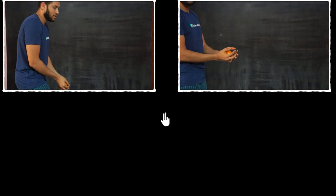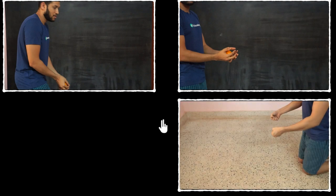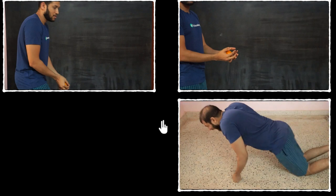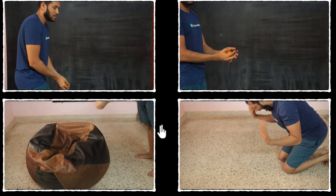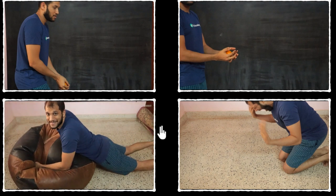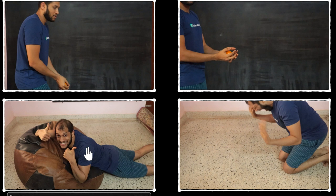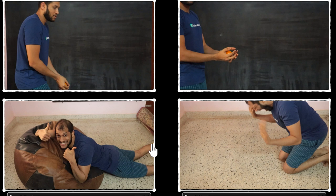A similar question: when you fall on a hard surface, it hurts — that hurts a lot. Please don't try this at home, it seriously hurts. On the other hand, we know that if you're falling on something soft like a cushion, or maybe in my case a bean bag, it doesn't hurt much. But why? Why does falling on soft surfaces not hurt us, but falling on hard surfaces does? The answer to these questions might seem obvious, but it isn't. So in this video, we're going to use momentum to answer this question.